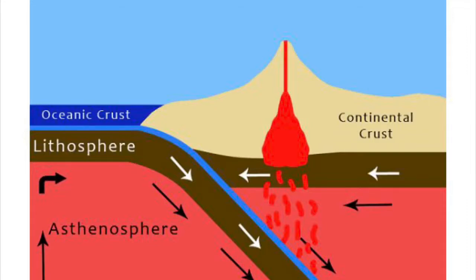But not all of the serpentinite goes all the way down. A lot of it, because it's slick and soapy and greasy, slips and slides and finds its way up through cracks and faults and crevices, up toward the top of the subducting ocean crust, where it acts as a lubricant to help the subducting ocean crust go down smoothly.